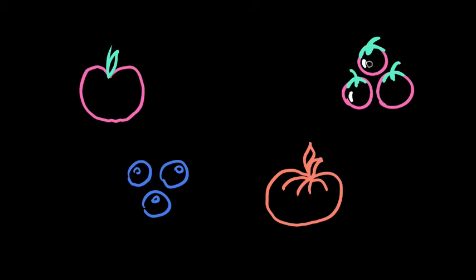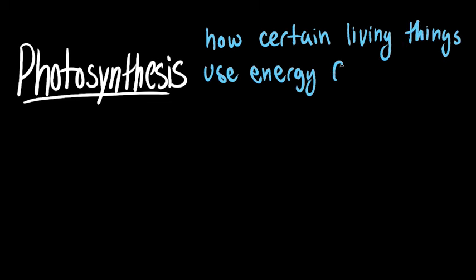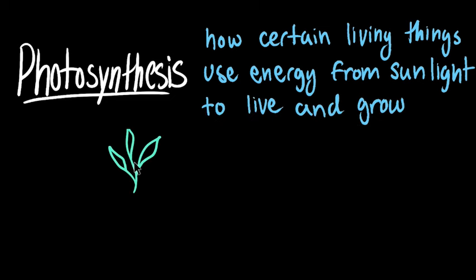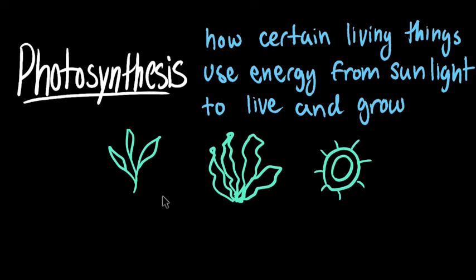How do they do it? Well, they use a process called photosynthesis. Photosynthesis is a scientific term to describe how certain living things use energy from sunlight to live and grow. Many different kinds of plants, algae, and various single-celled organisms are able to carry out this amazing process.